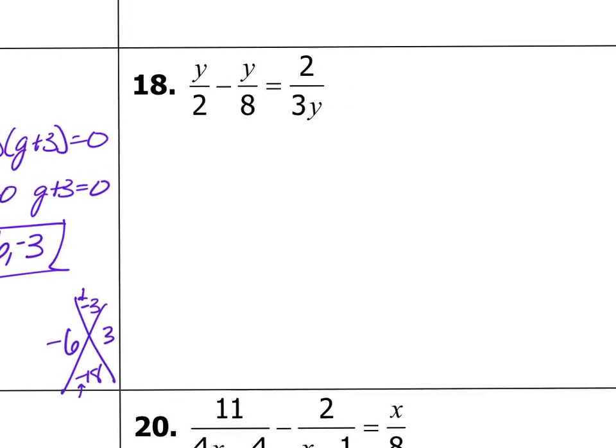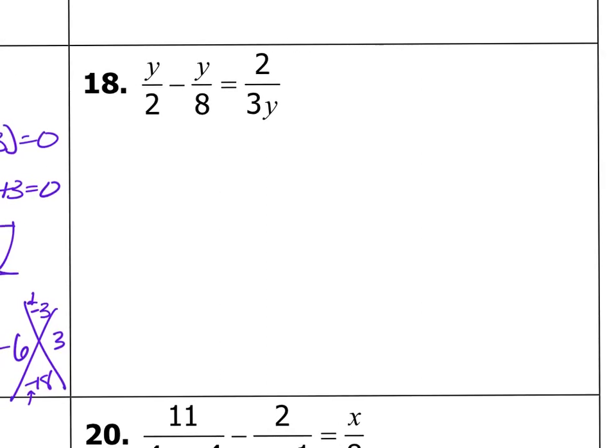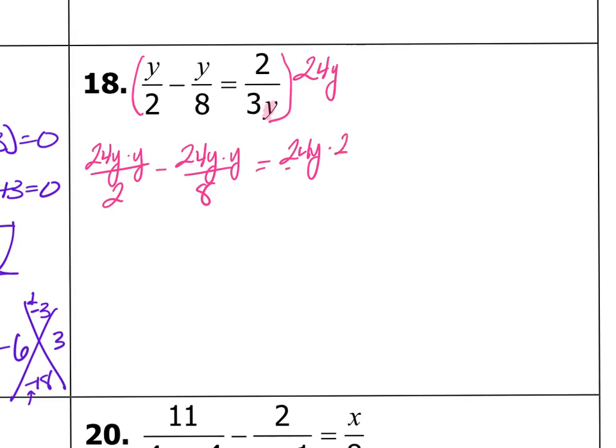So here I don't have any common denominators. None of my denominators are the same. So what I'm going to do here is multiply the whole thing by whatever my common denominator is. So I need to know what number does 2, 8, and 3 go into. I think that's going to be 24. And since there's a y here, my common denominator is actually going to be 24y. So what I'm trying to do is get rid of all my denominators. So I'm going to multiply that whole thing by 24y. So I get 24y times y divided by 2 minus 24y times y divided by 8 equals 24y times 2 divided by 3y.